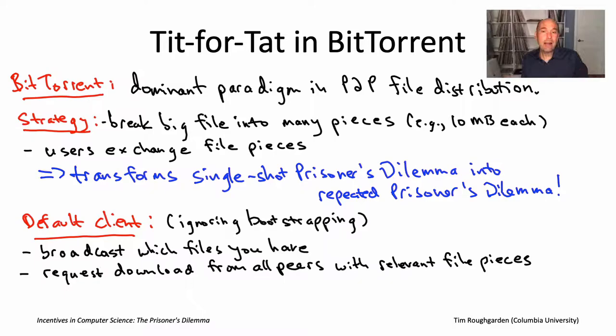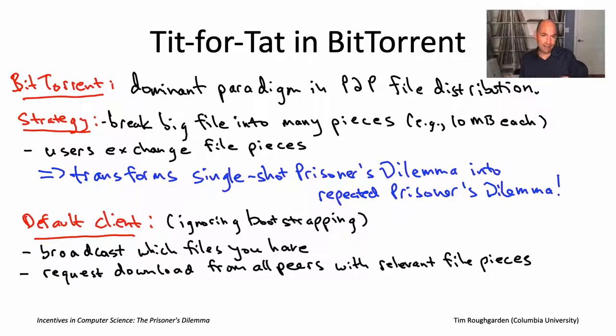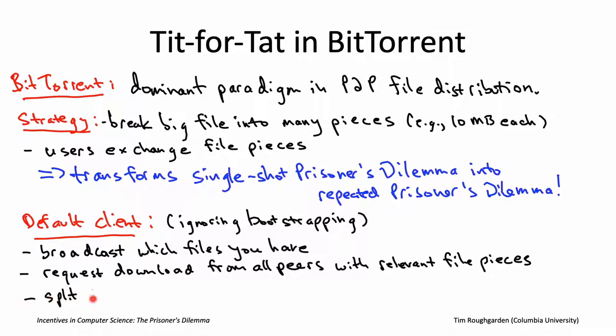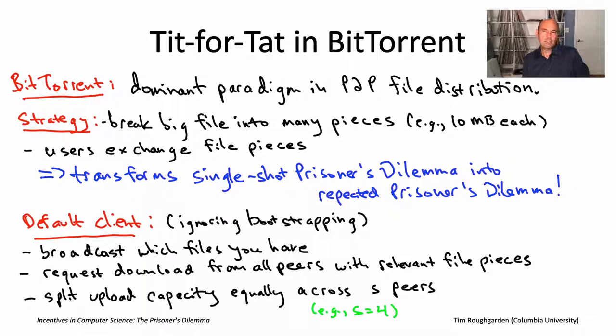On the other hand, what about uploading? You may be getting download requests from all kinds of peers, but you only have a limited amount of upload capacity, so you need to figure out how to spend that upload capacity. In the reference client, out of all the peers requesting file pieces from you, you choose a small number — it's a configurable parameter, let's call it S. A typical example might be S equals four. So if 20 of your peers are requesting file pieces from you and you're only going to pick four to actually upload to, how do you pick those four out of the 20?